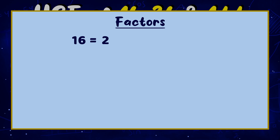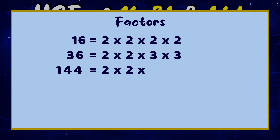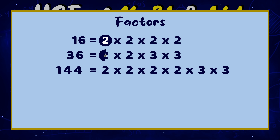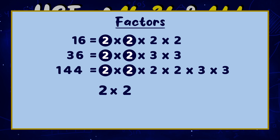After dividing values, we have prime factors for each value. Now we will find similar factors from each value. The common prime factor is 2. HCF is the product of common prime factors.